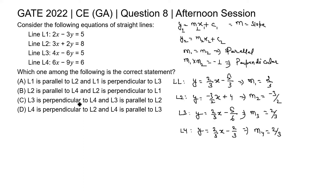Now check the options. Option A: L1 is parallel to L2. The slopes of L1 and L2 are 2/3 and −3/2 respectively, which are not the same. So L1 is not parallel to L2, and option A is incorrect.